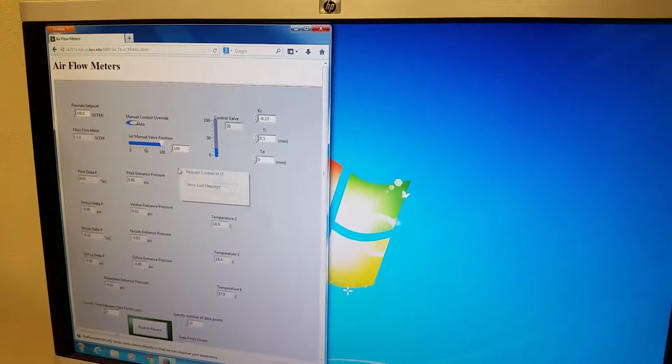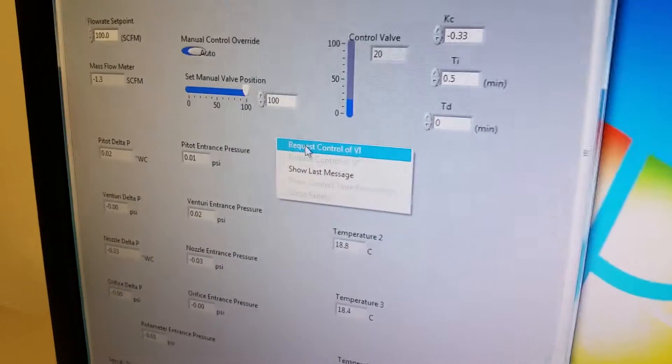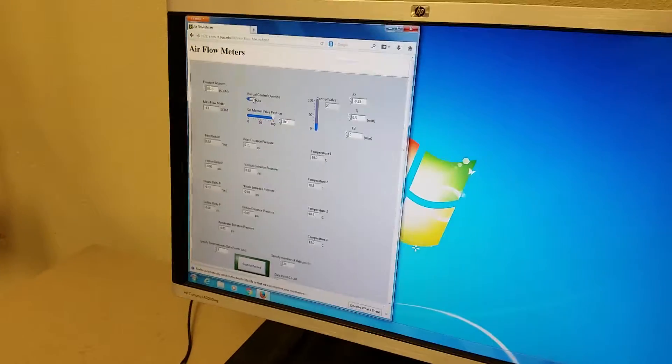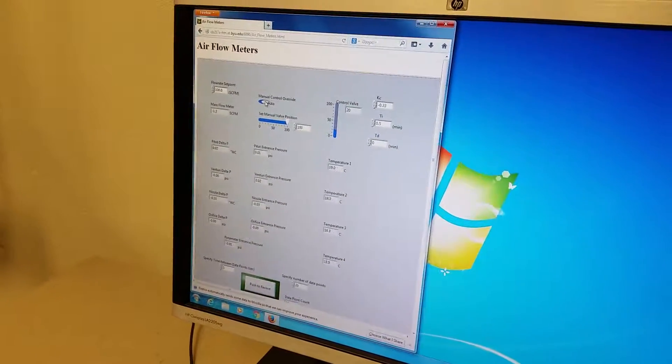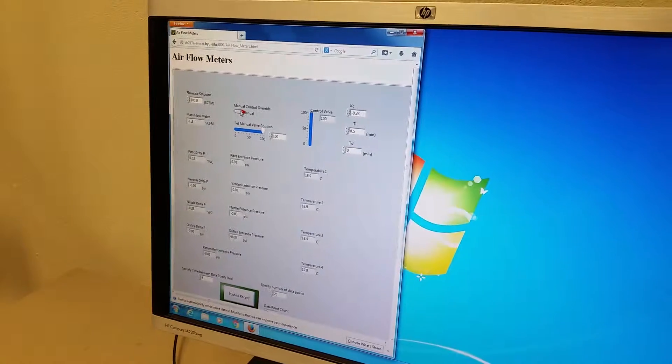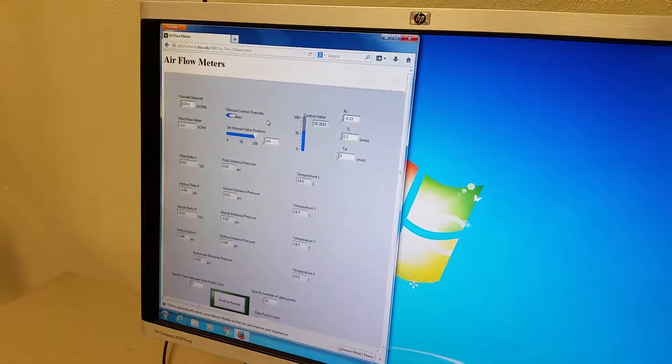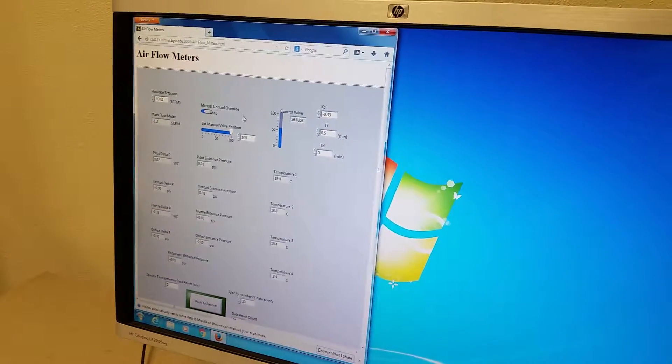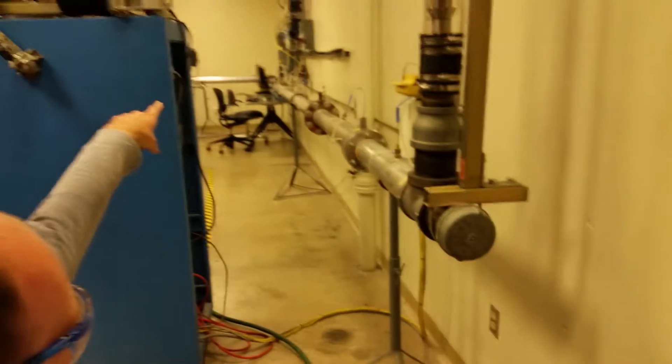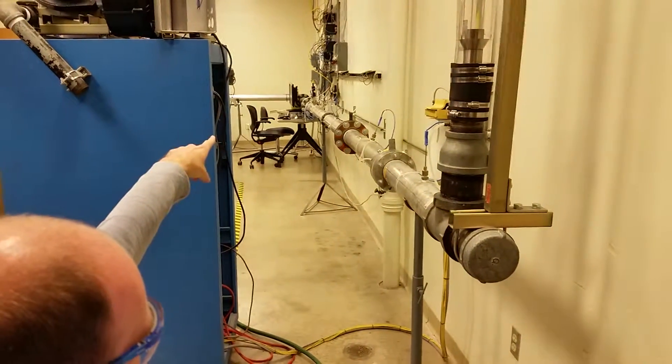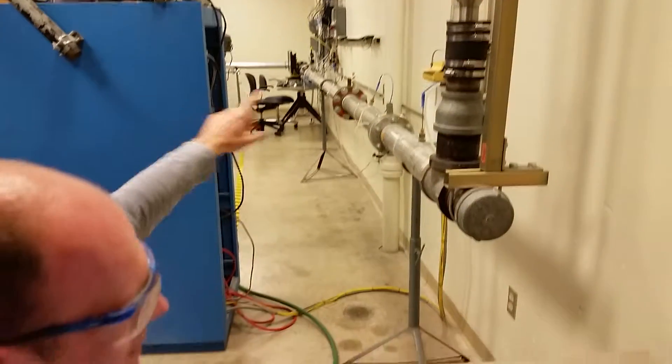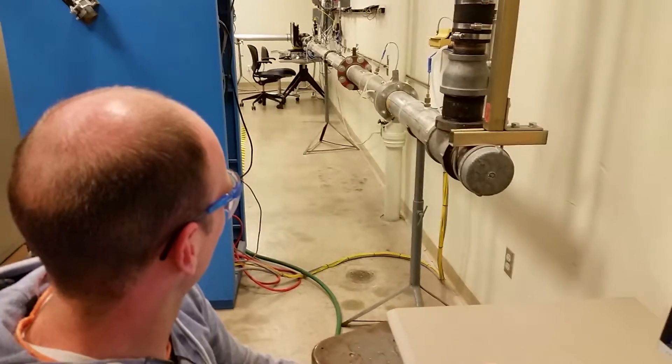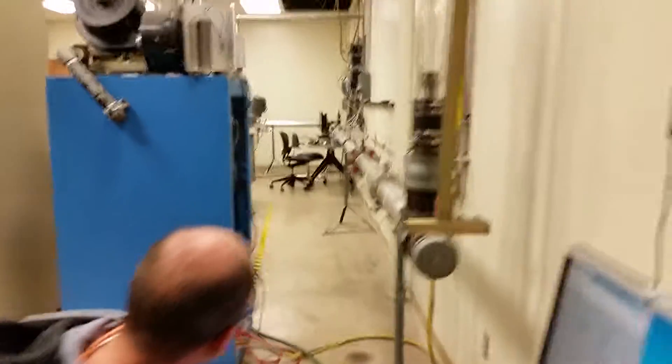First thing you're going to do, right click and request control of your VI. And from there, it should turn it from auto, you can turn it to manual. But we're going to keep it on auto for all intents and purposes. And then way back in the other corner, you're going to see a little switch box over there. Flip it on and that'll start your process. I think Jackson's on his way over there right now.